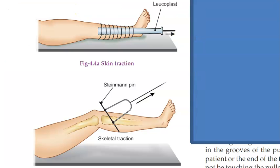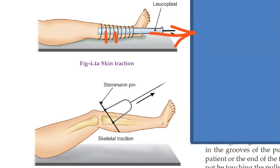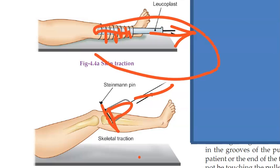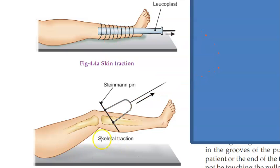There are also two types of traction you should know based on how you apply it. This is skin traction — the skin is helping in the pulling. You can see there is a pull shown here and they have bandaged it to the skin. And in the lower one, it is inside — you can see there is a pin inside and this is skeletal traction. Here the skeletal system is being used, and here the skin is being used. That's it — skin traction and skeletal traction.